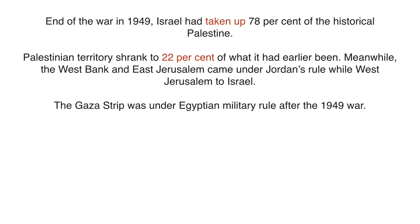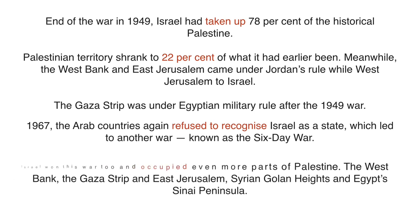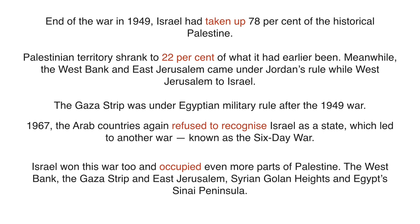The idea of creating a new Jewish majority state did not go well for Arab countries. There was a war, and at the end of the war in 1949, Israel had taken up to 78 percent of historical Palestine — Palestinian territory shrank to 22 percent of what it had been. The West Bank and East Jerusalem came under Jordan's rule, West Jerusalem to Israel, and the Gaza Strip came under Egyptian military rule after the 1949 war.